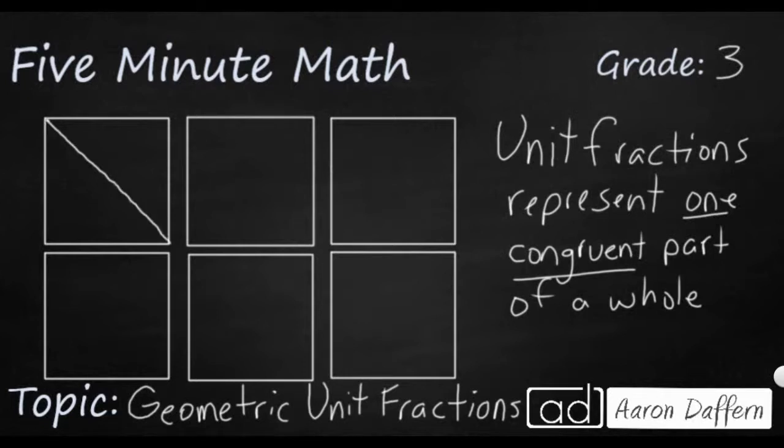And you see I've got two unit fractions, one, because our numerator is always going to be one. I've got one half. So what I've done is I've made two triangles.